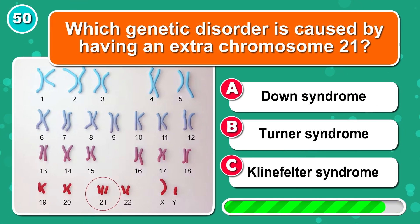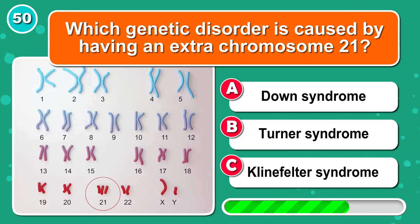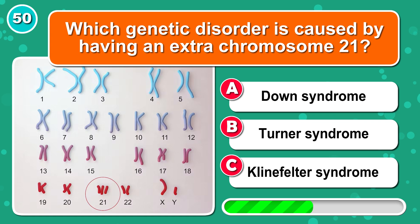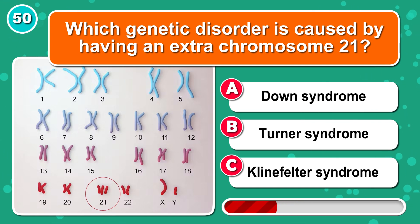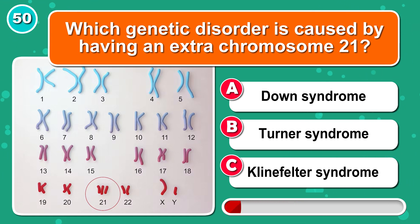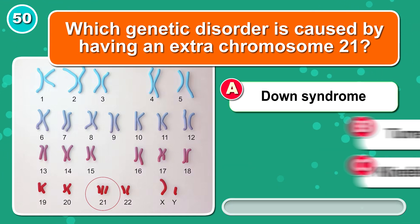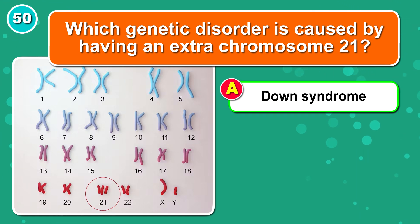Which genetic disorder is caused by having an extra chromosome 21? The answer is A: Down syndrome.